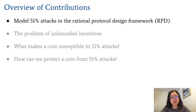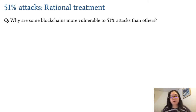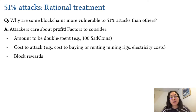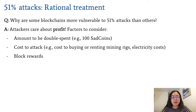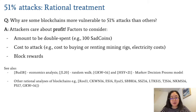We know that sometimes honest majority is broken, but this doesn't really answer why some blockchains might be more vulnerable to these attacks than others. The rational treatment gives a rather intuitive answer: attackers don't usually attack blockchains for fun — they usually care about profit. Factors they might consider include the amount they want to double spend, the cost of attack, or the block rewards. Several previous works have analyzed 51% attacks in the rational setting under various adversarial models, mostly from economics or probabilistic analysis perspectives.